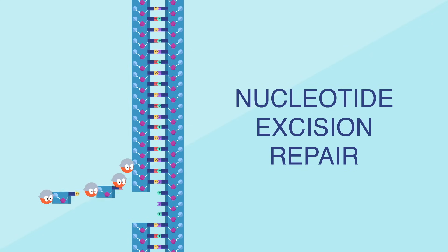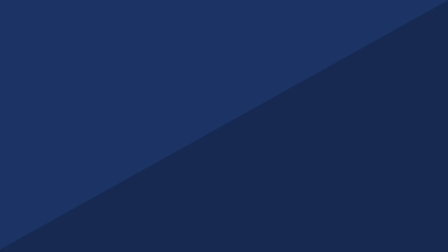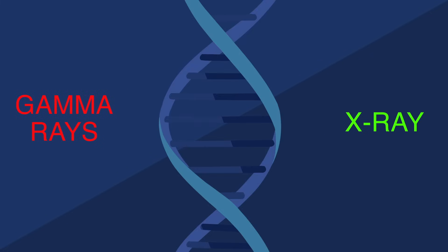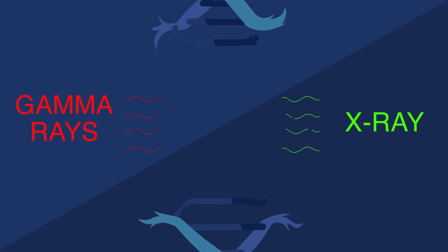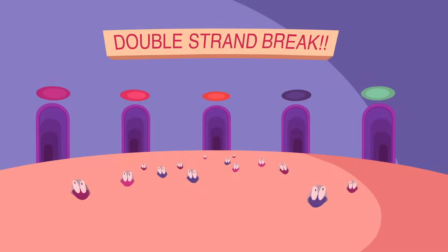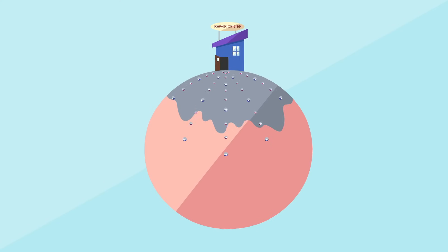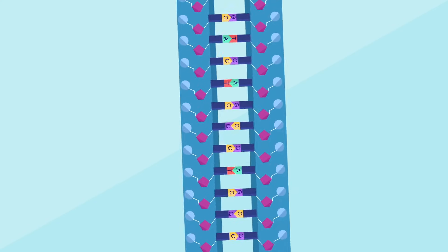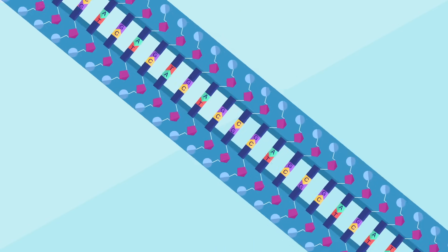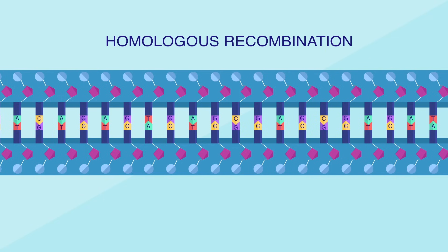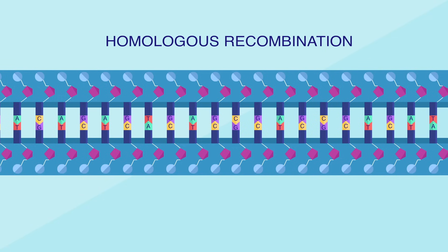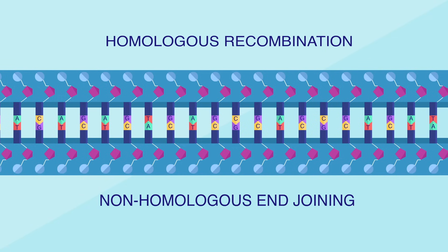Very high frequency radiation like gamma rays and X-rays cause a different kind of damage. They can actually sever one or both strands of the DNA backbone. Double strand breaks are the most dangerous — even one can cause cell death.